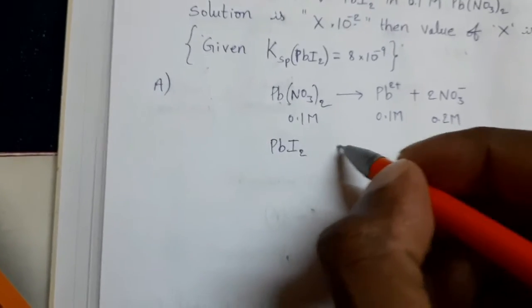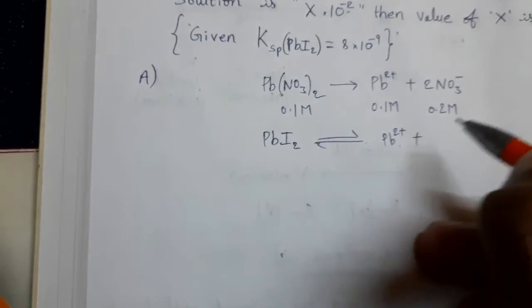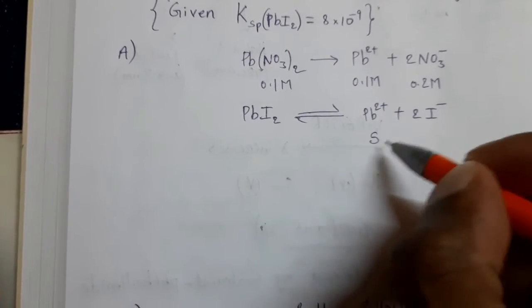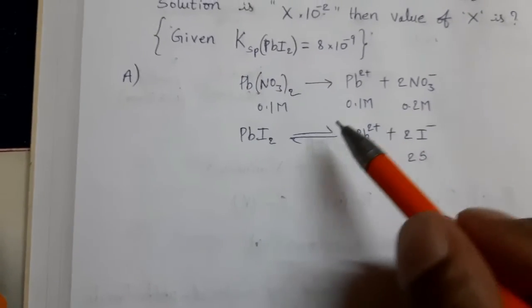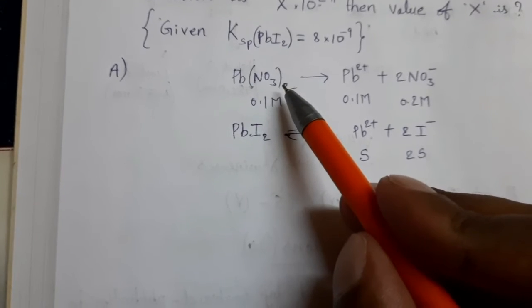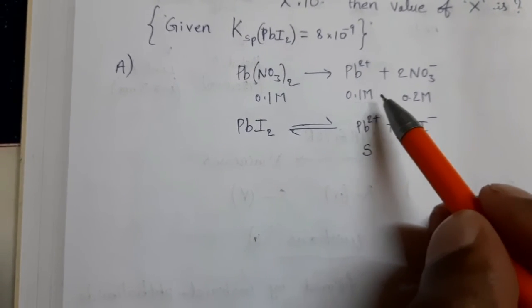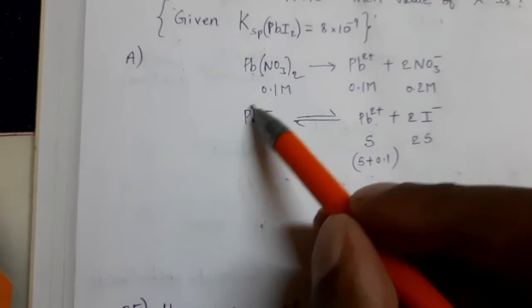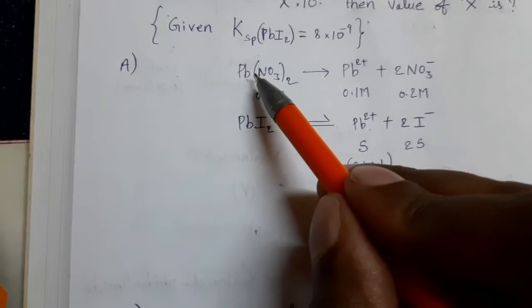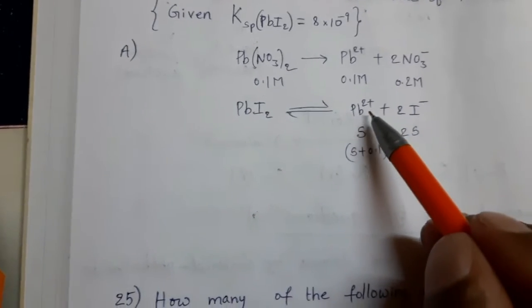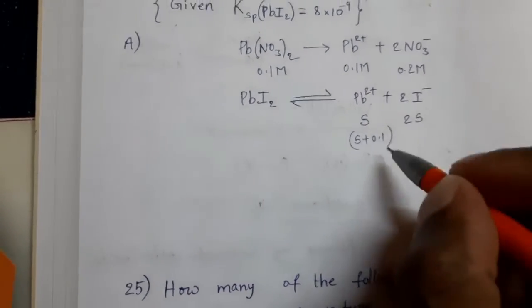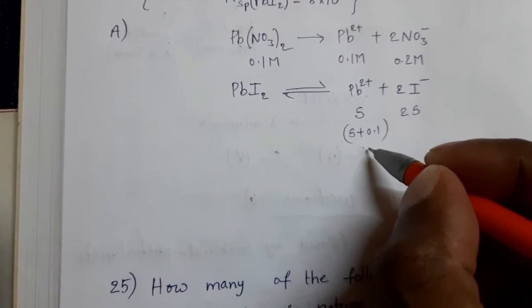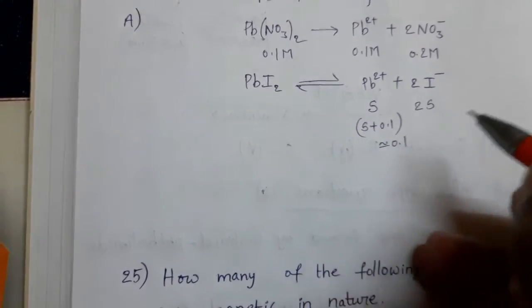Now, PbI2 gives rise to Pb2+ plus 2I-. Let the solubility of this compound is S. 1 mole means S. 2 moles means 2S. But, here this PbI2 is present in Pb(NO3)2 solution. Already, lead ion concentration 0.1 molar. Now, total lead ion concentration means S plus 0.1. This compound is present in this solution. Because of this solution, lead ion concentration is this one. From this, some amount of lead ions are produced. Total lead ion concentration is this one. But, here solubility of this compound is very less.